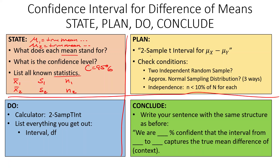The name of our test is a two-sample t interval because we're making an interval for the difference of means. You can use subscripts one minus two or x minus y — it doesn't really matter. If you have specific subscripts like 2000 and 2020 for years, you can use those. It just depends on how you want to name things, and it should match how you named them in the State step.